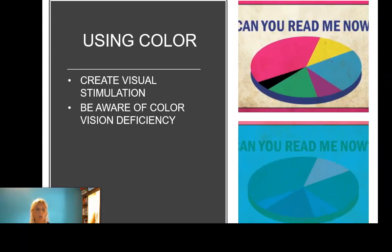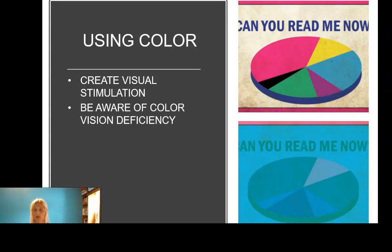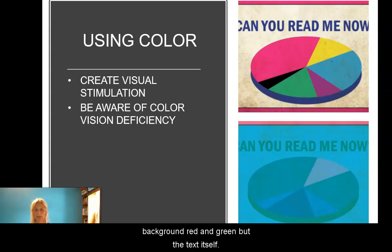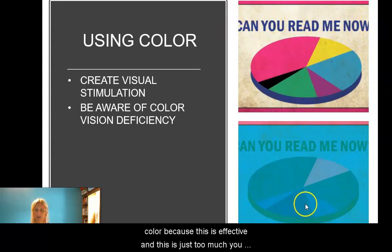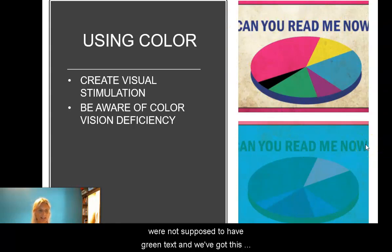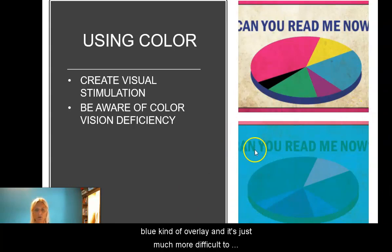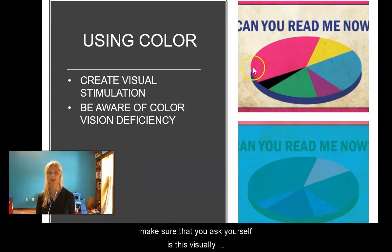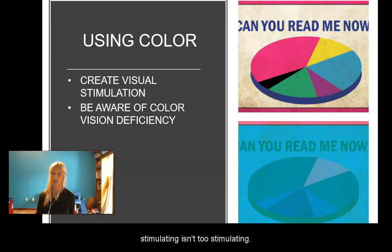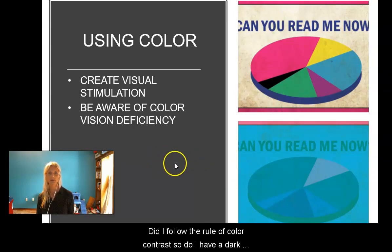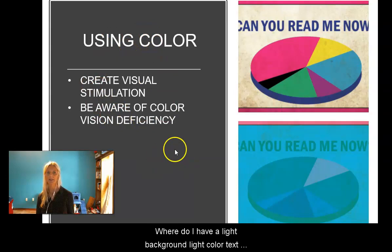When using color, you want to create visual stimulation but be aware of color vision deficiency. For people who are colorblind, red and green are often problematic — avoid using red or green as text colors. You can use red and green in backgrounds, but not as text. Also follow the rule of color contrast: use a dark background with light-colored text, or a light background with dark-colored text. Don't combine elements that make it difficult to read — like green text over a blue overlay.